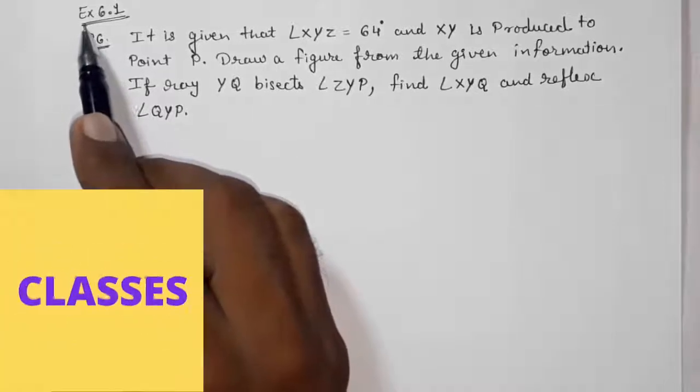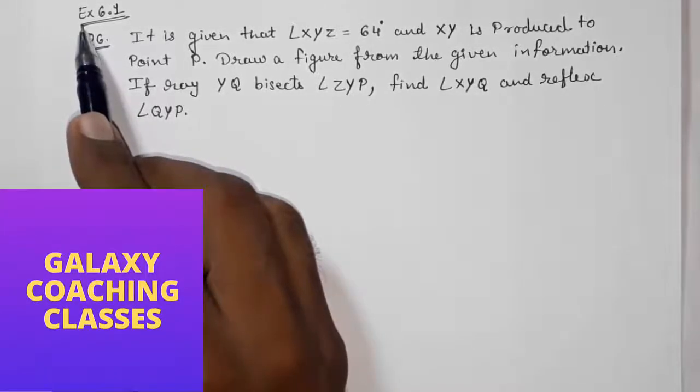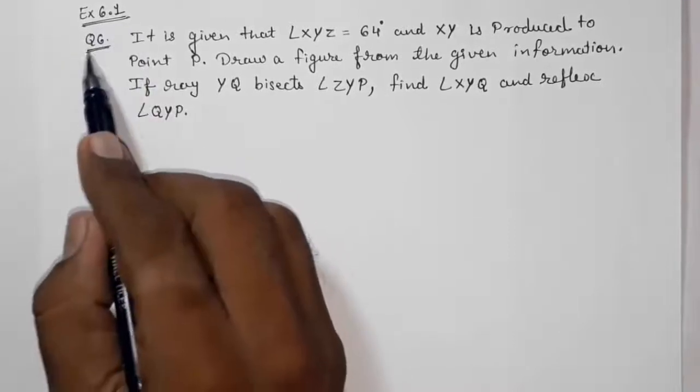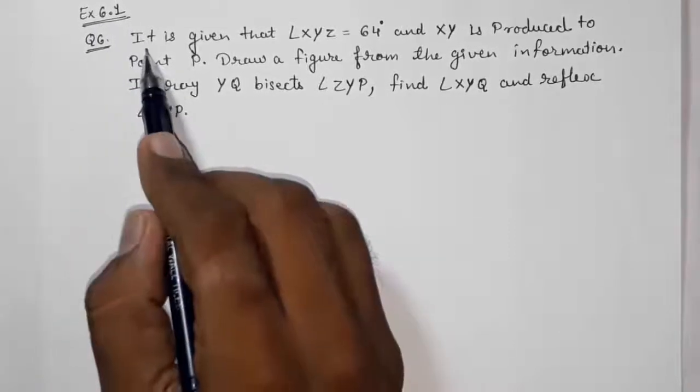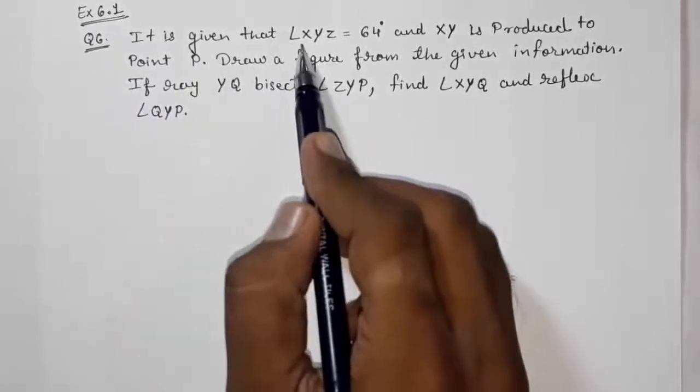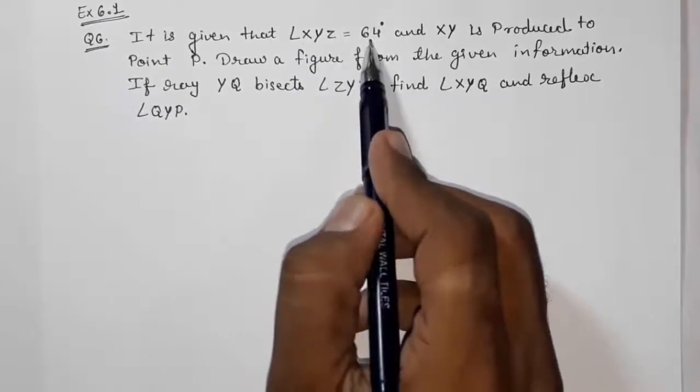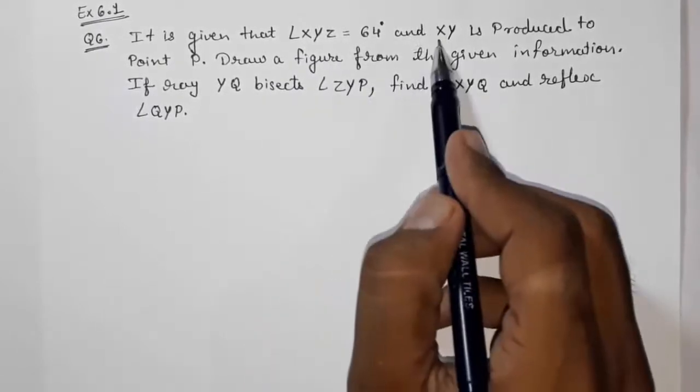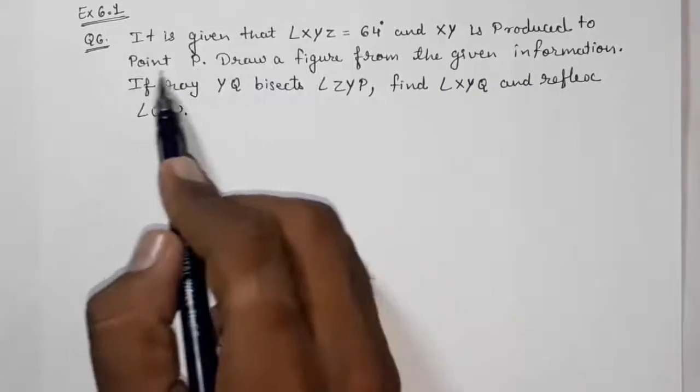Hello friends, today we are going to show CBSE Class 9th math exercise 6.1 question number 6. It is given that angle XYZ is equal to 64 degrees and XY is produced to point P.